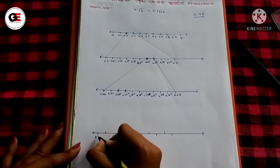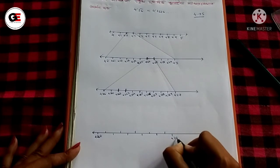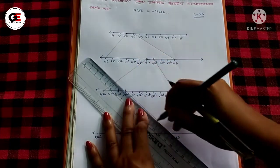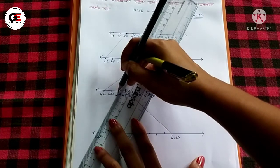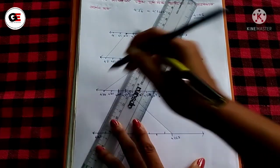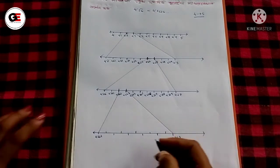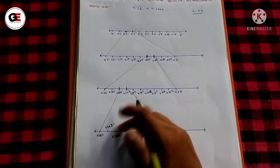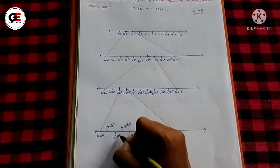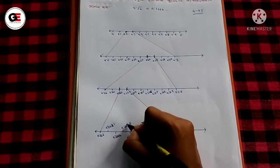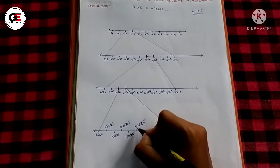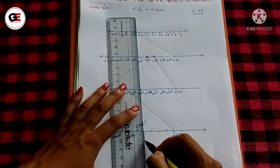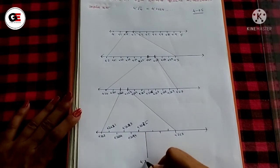So we have 4.262 and 4.263. Next we subdivide between 4.262 and 4.263, marking 4.2621, 4.2622, 4.2623, 4.2624, 4.2625, and 4.2626.